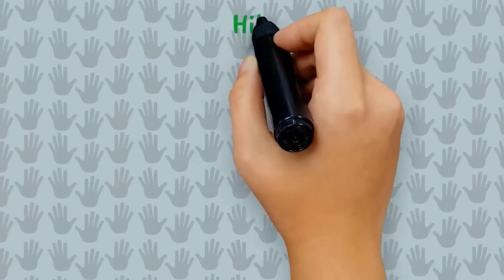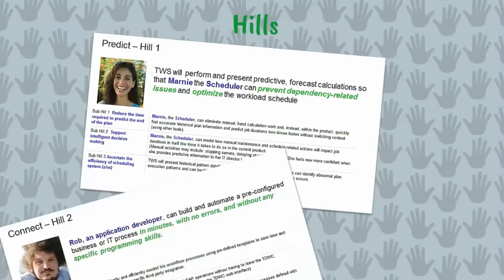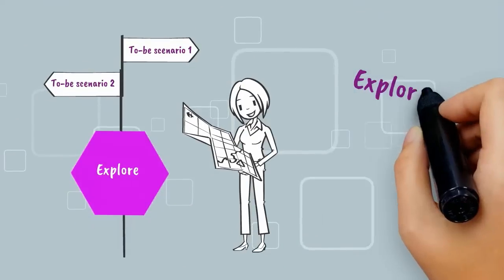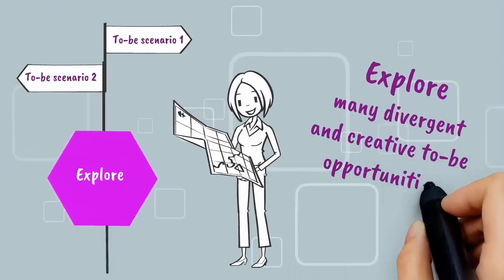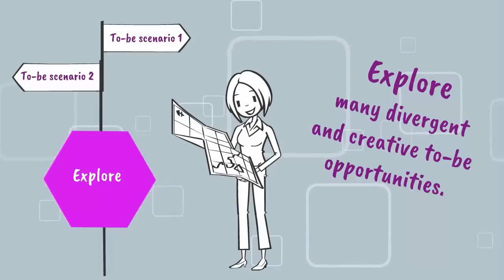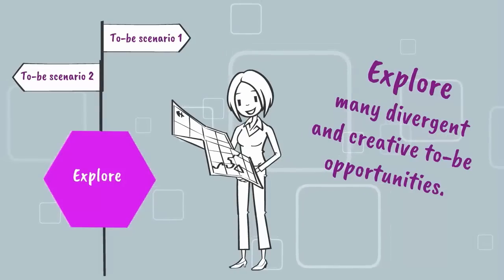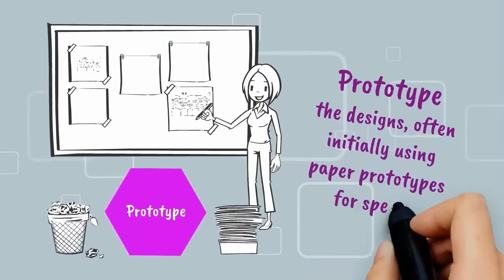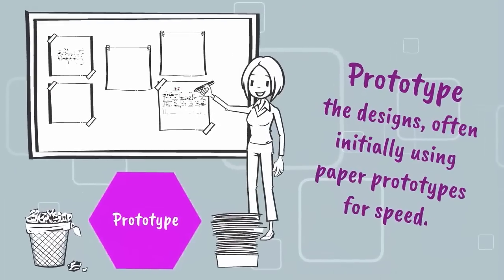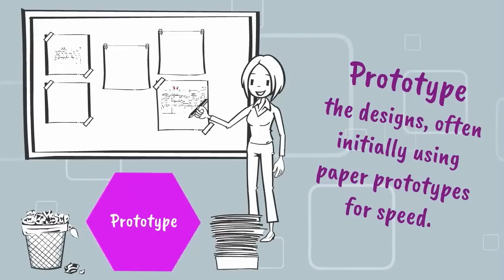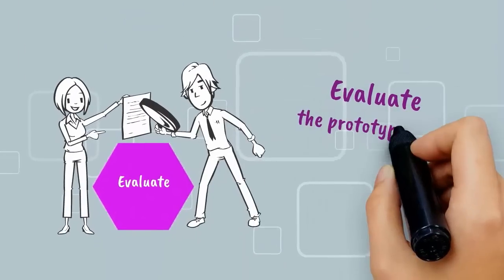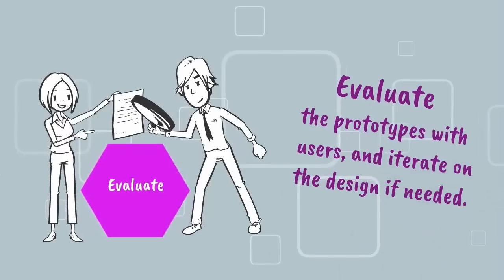Let's see an example of the hills at IBM Workload Scheduler. We then explore many widely divergent and creative to-be opportunities and their effects on the user experience. We then prototype the designs, often initially using paper prototypes for speed. Prototypes transform concepts into artifacts. We then evaluate the prototypes with users and, based on their feedback, iterate on the designs if needed.